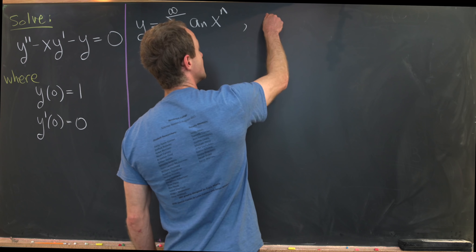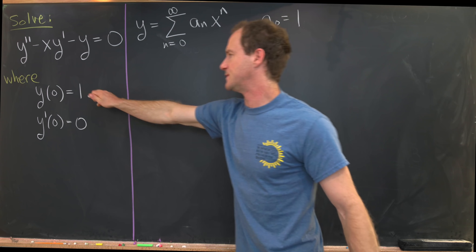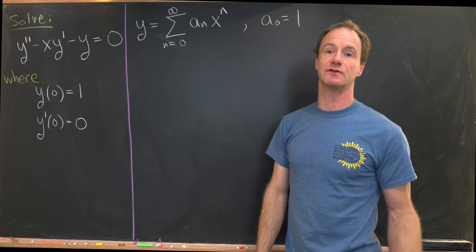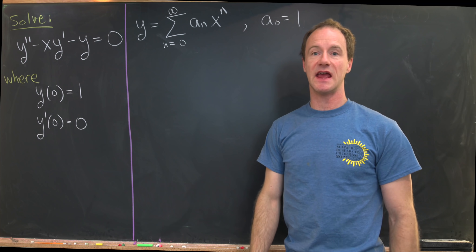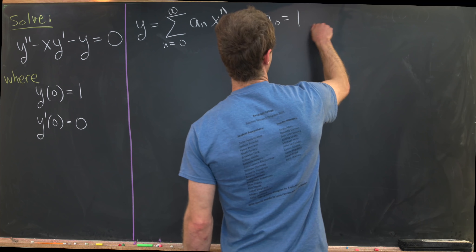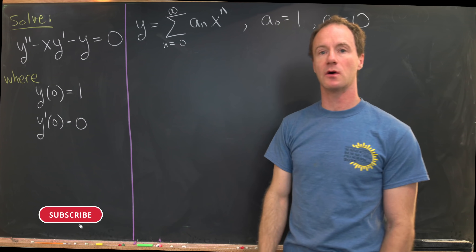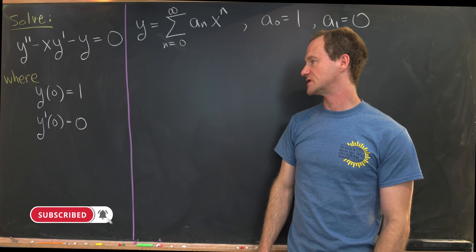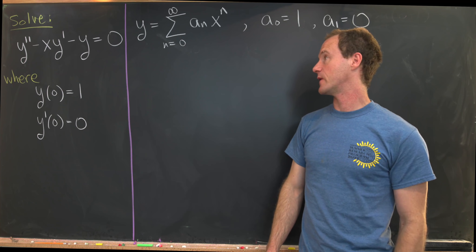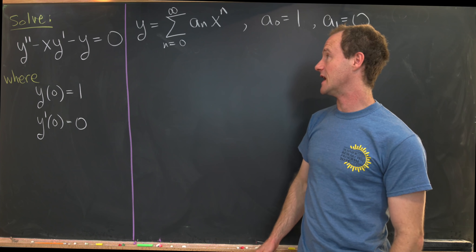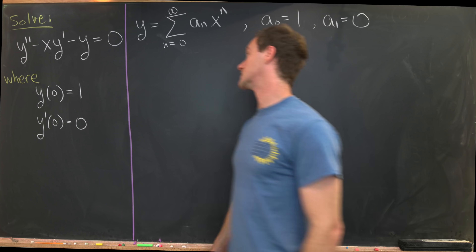Notice immediately we know that a₀ is equal to one, because y evaluated at zero is one, and y evaluated at zero in this series is a₀. Another thing we know immediately is that a₁ is equal to zero. If we take the derivative of this series and evaluate at x equals zero, we get a₁. So now let's populate the rest of the terms that we need.